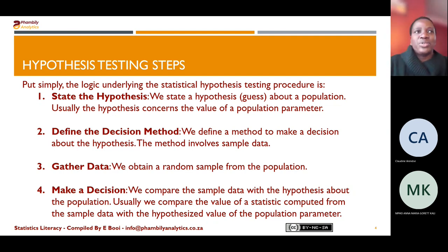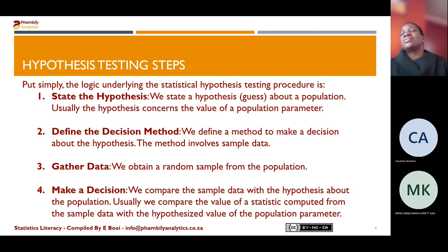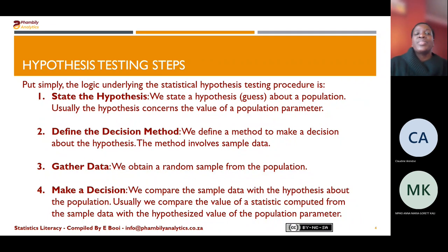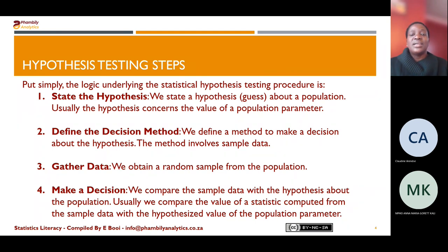Once you know the method — whether it's a Z-test or T-test — and you've found the critical values, you do the calculation of the test statistic. When doing a one-tail or two-tail test statistic, you need to know how to calculate it. Once you have your test statistic, you make your decision based on the methods you've identified — using either the p-value or the critical value and the test statistic. That decision needs to refer back to your hypothesis statement about the population.